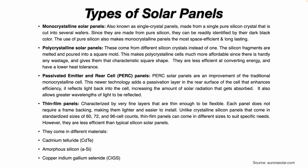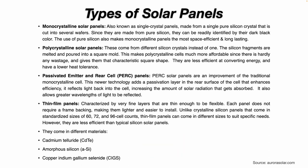Then we have thin film panels, characterized by very fine layers that are thin enough to be flexible. Each panel does not require a frame backing, making them lighter and easier to install. However, unlike crystalline silicon panels that come in standardized sizes of 60, 72, and 96 cell counts, thin film panels can come in different sizes to suit specific needs. However, they are less efficient than typical silicon solar panels. The thin film panels come in different materials, and we're not going to go into each type in this video.